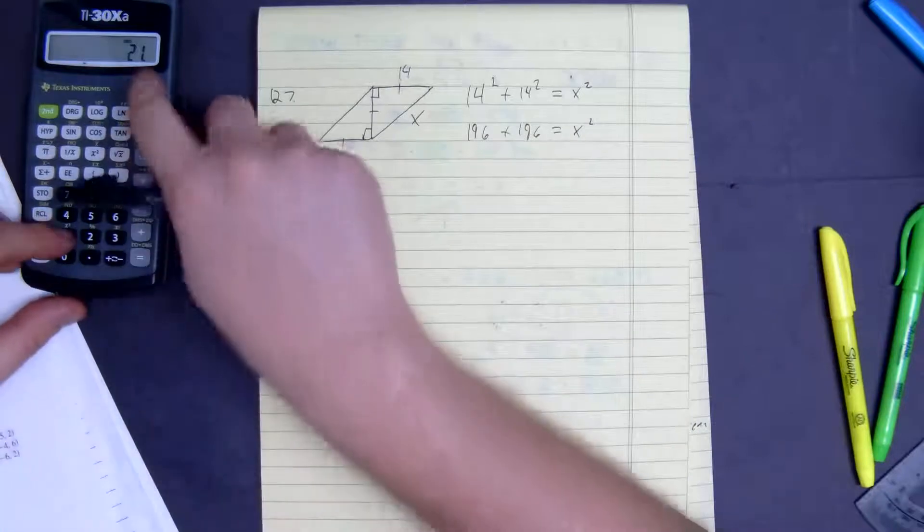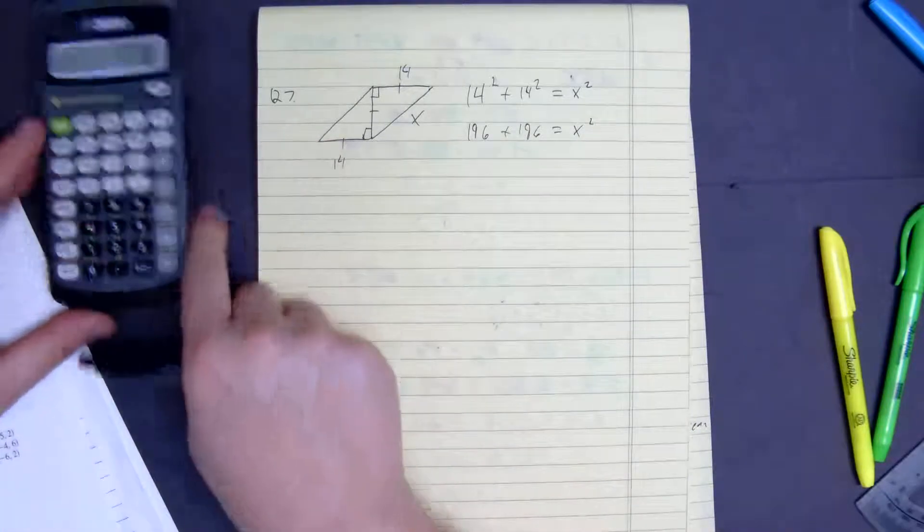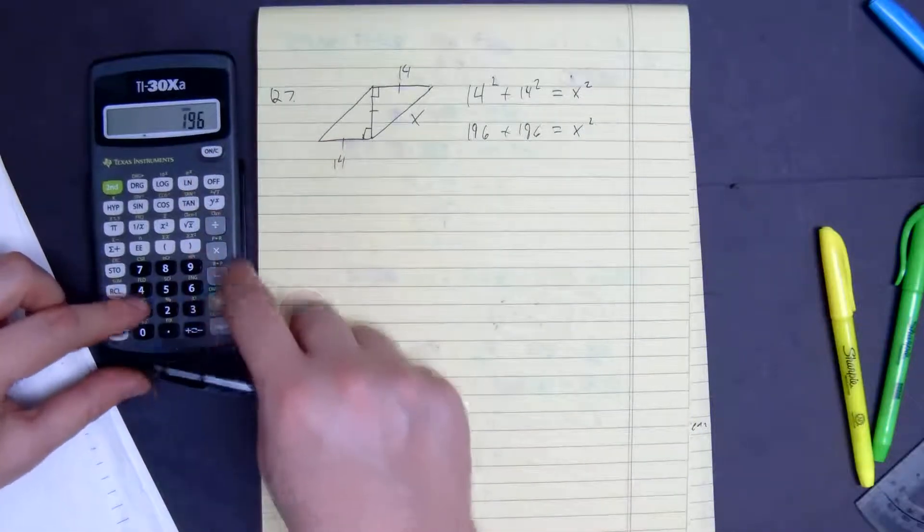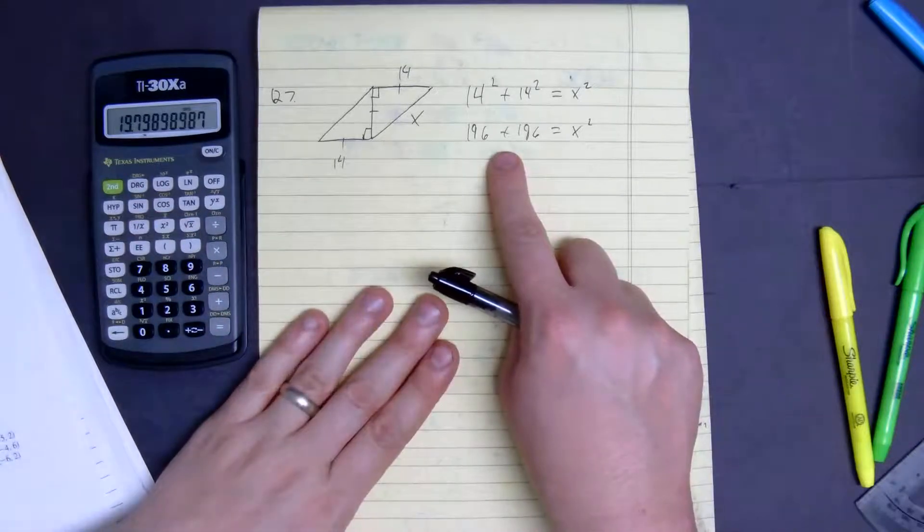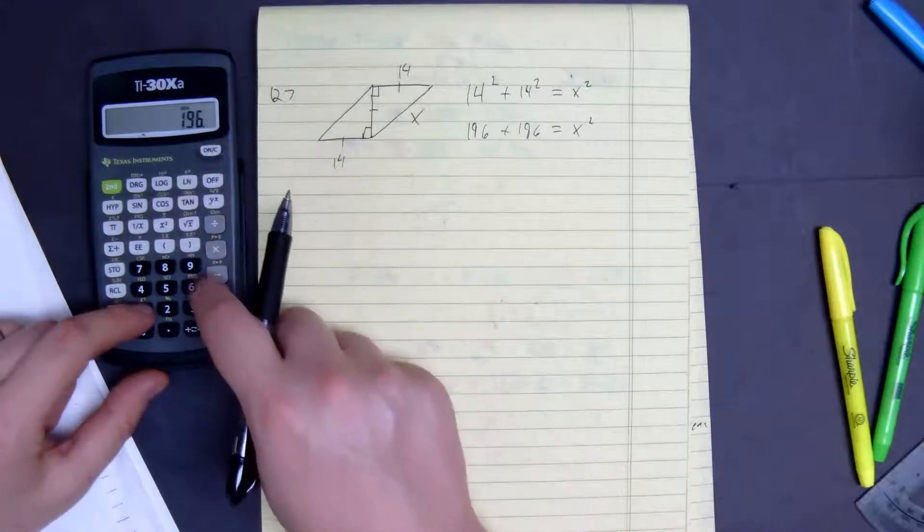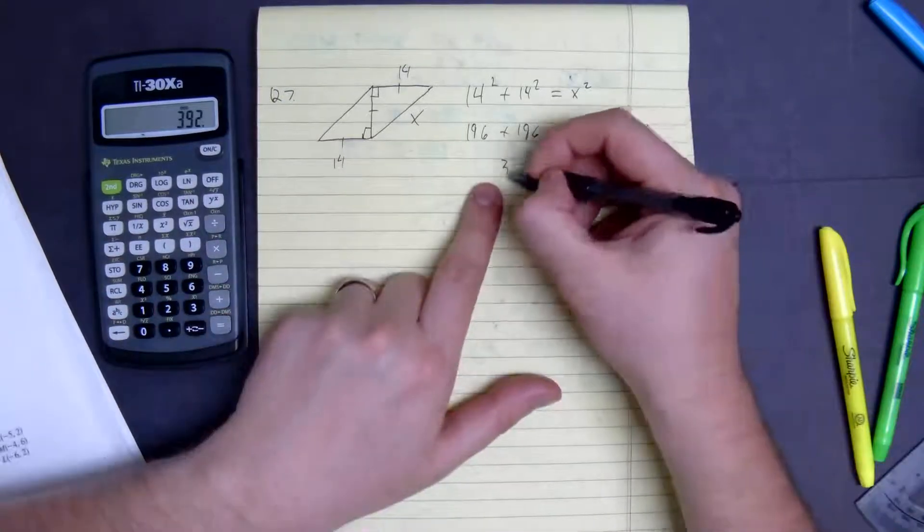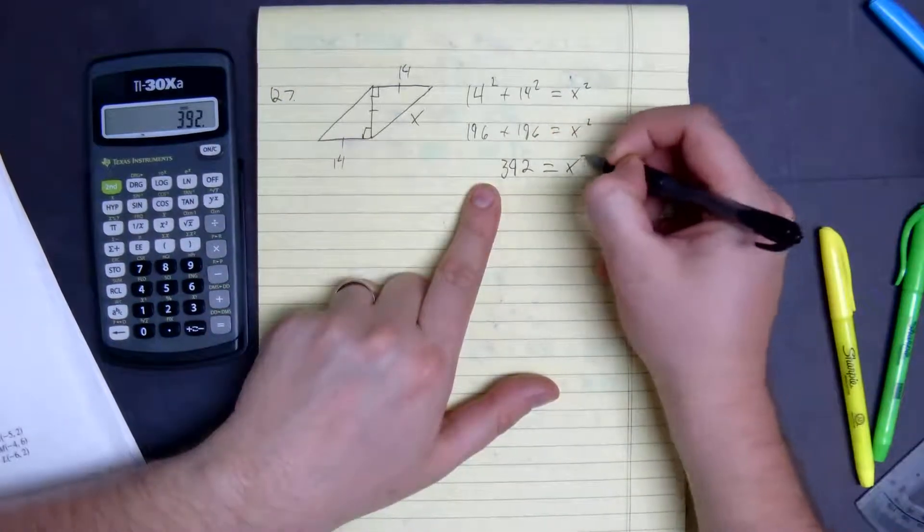196, I'm going to show you because I already know it. I'm going to say 196 plus 196 equals square root it, does not give us a good answer, so 196 plus 196, 392 equals x squared.